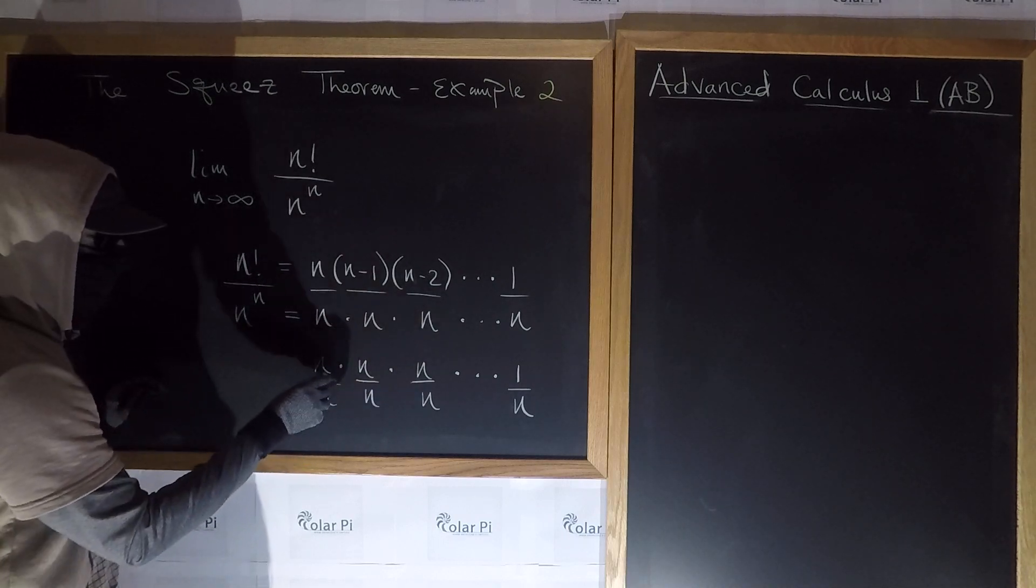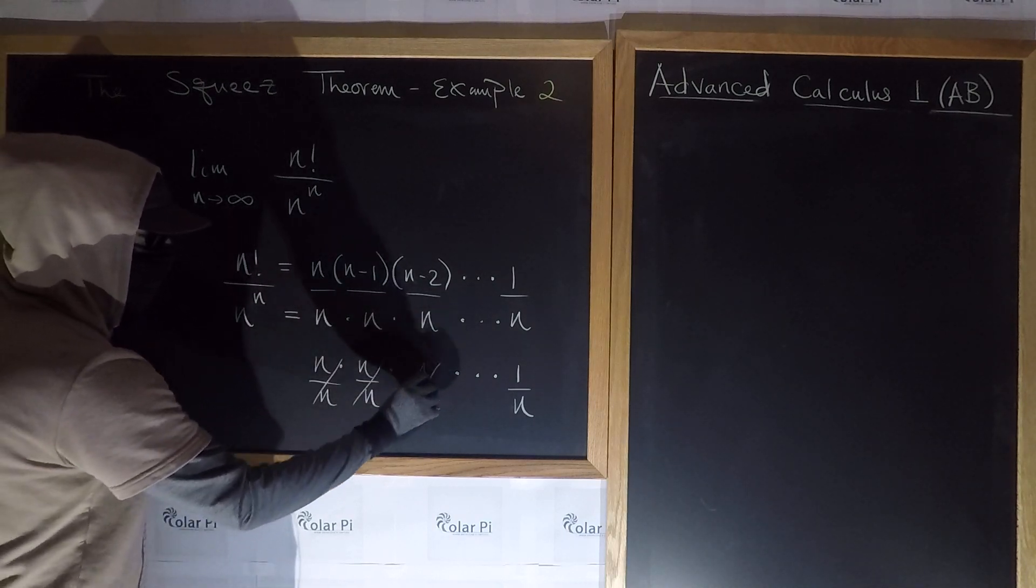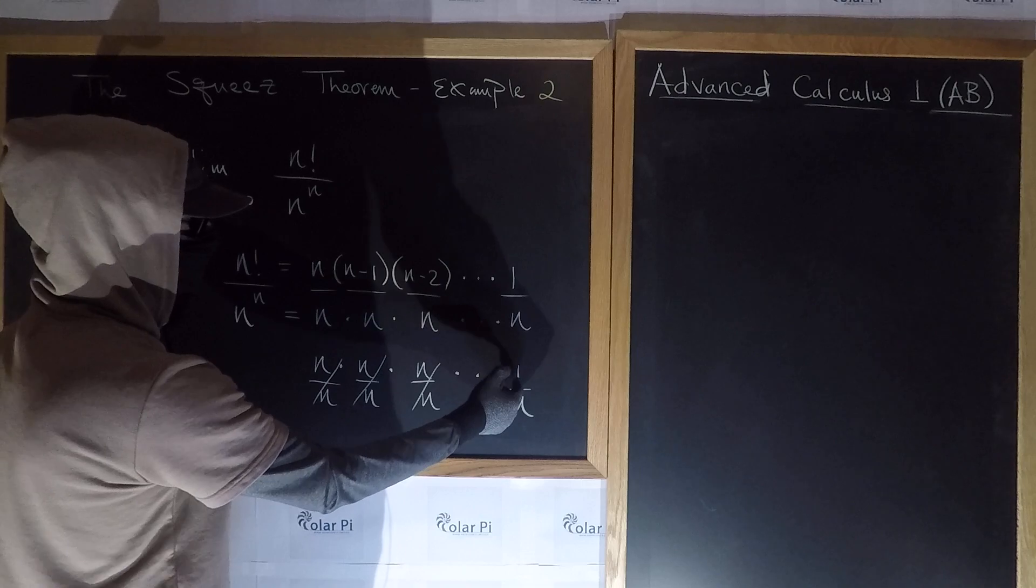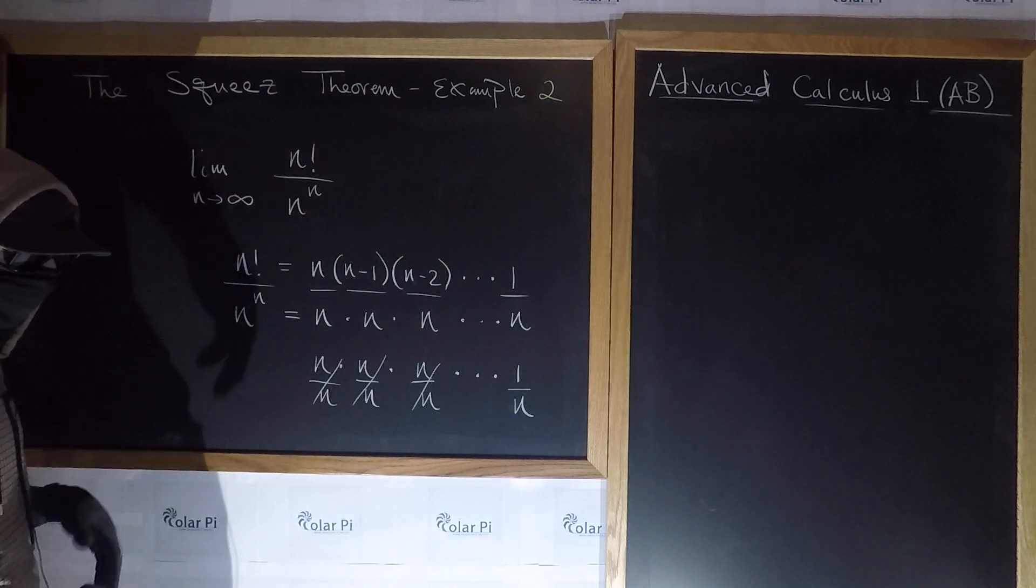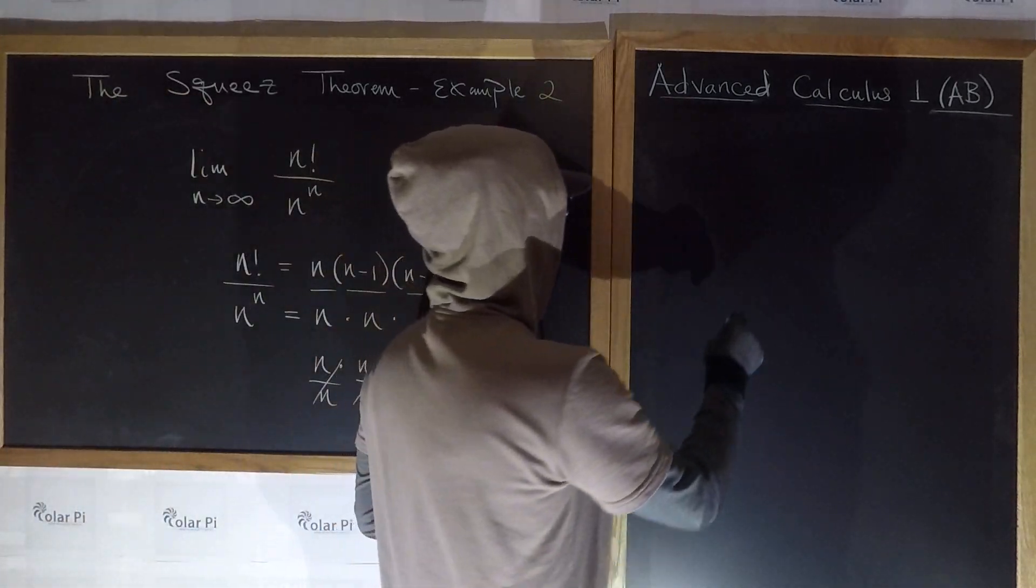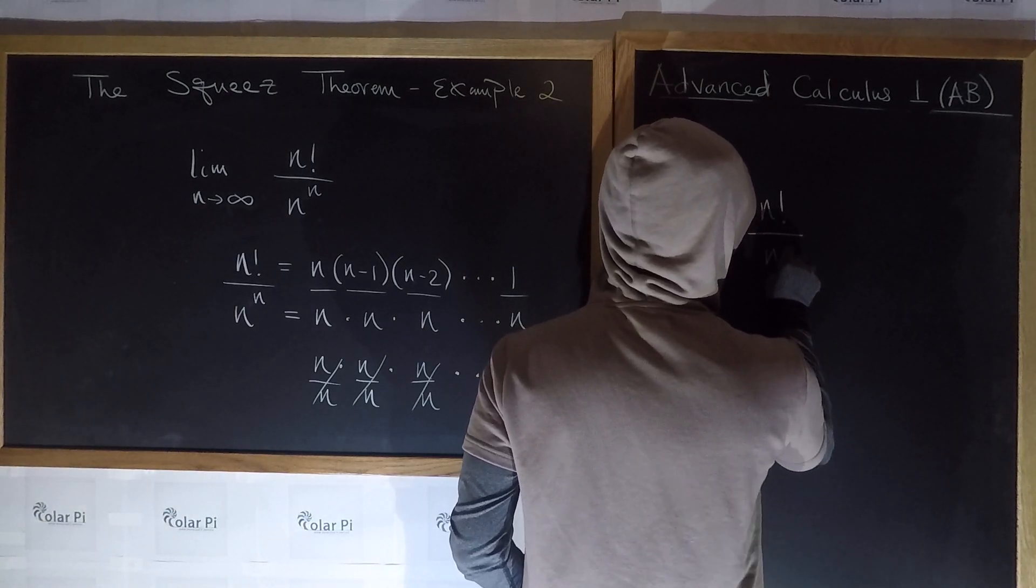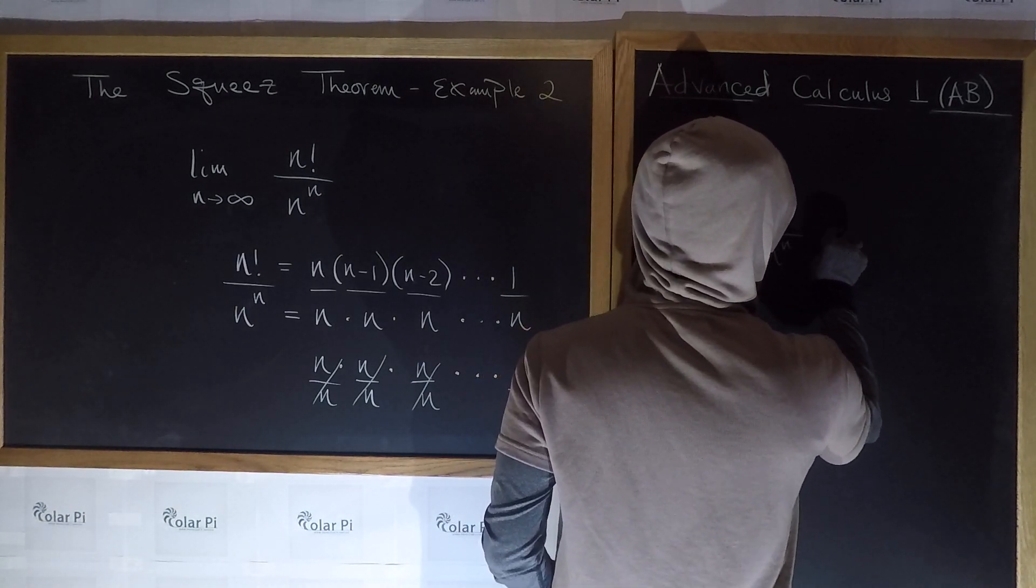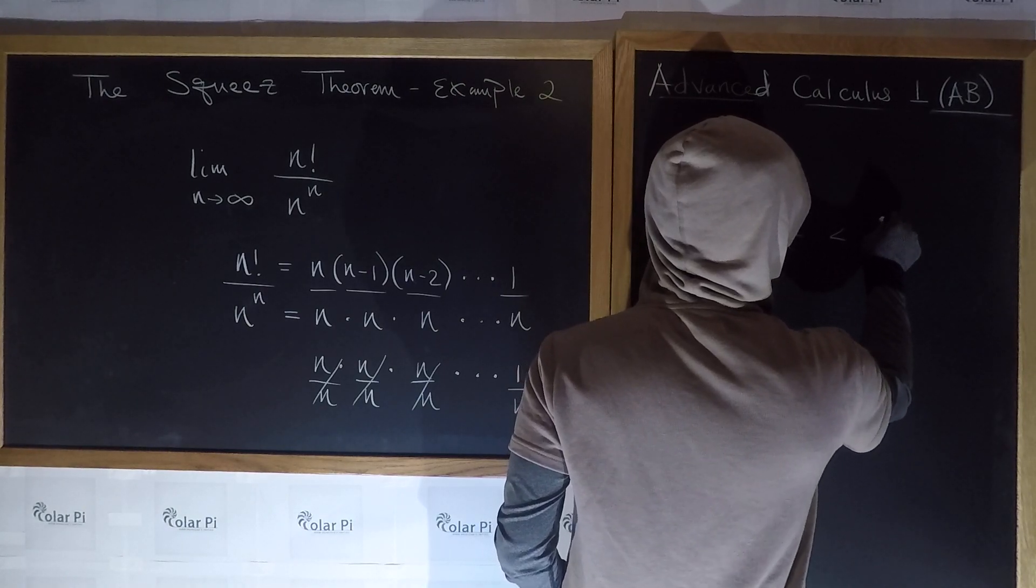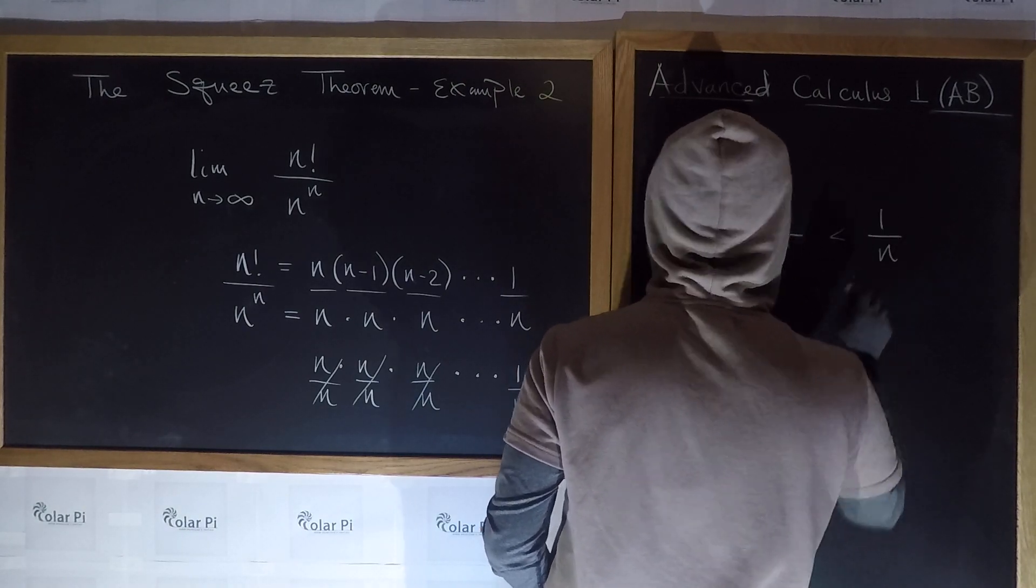But wait, what is this? If we cancel each of these, because they're ones, the only thing that survives is 1 over n. So, in conclusion, what we're saying is that n factorial divided by n to the n is less than 1 over n.